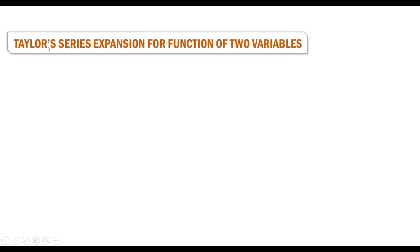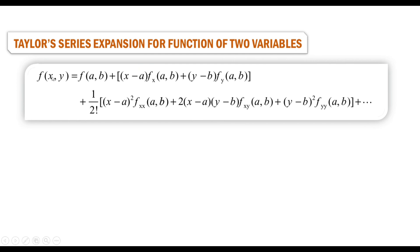In this video we are going to discuss the Taylor series expansion for a function of two variables. Let f be a function of two independent variables x and y, defined in a region of the x-y plane. Let (a, b) be any point in that region. Suppose the function has all its partial derivatives in a neighborhood of (a, b); then the Taylor series expansion is f(x,y) = f(a,b) + (x−a)·f_x(a,b) + (y−b)·f_y(a,b) + second and higher order terms.